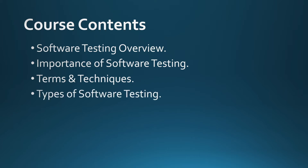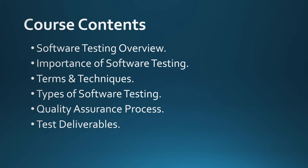Class 4 will cover types of software testing. Class 5 will cover the quality assurance process. Class 6 will cover test deliverables. And class 7 will cover all those points which are required for you to start your career as a software tester.